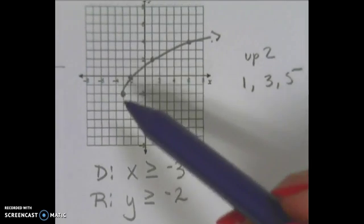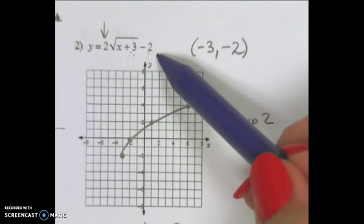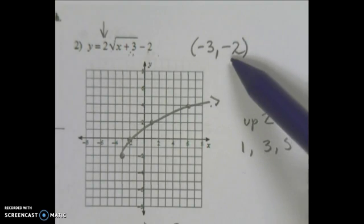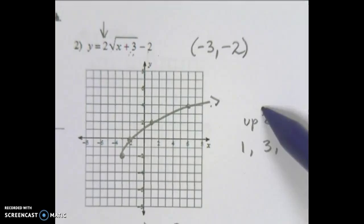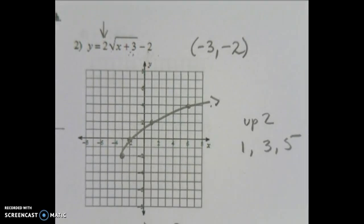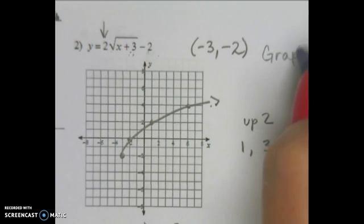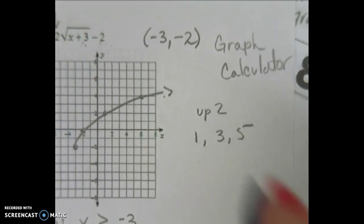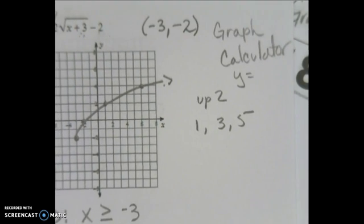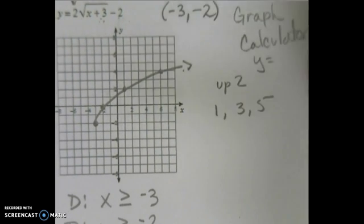How did I find this starting point? Opposite, keep. So it tells me my starting point is at negative 3, negative 2. This is a square root, so it's my wave. You can also graph these in your calculator — go to y equals and type it in and look at your table of values, but I am going to show you doing them by hand.